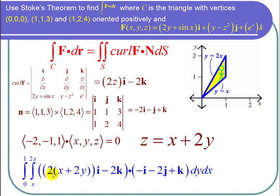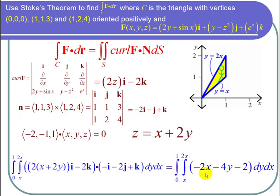So let's take the dot product. This, by the way, is 2x plus 4y times negative 1 or negative 2x minus 4y. Then we have negative 2 times positive 1. So we get negative 2x minus 4y minus 2.